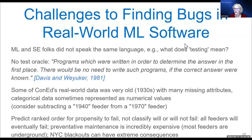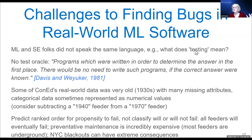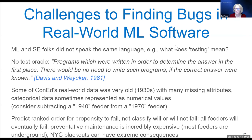We had a lot of trouble dealing with the Con Ed data, and with the cultural gap between machine learning and software engineering people. One of the simplest issues was: what does 'testing' mean? For AI people, testing means evaluating accuracy on a holdout data set — finding precision and recall. But for software engineering people, testing means finding bugs in the software. So when I said 'testing,' they heard 'accuracy,' while I was thinking about bugs.